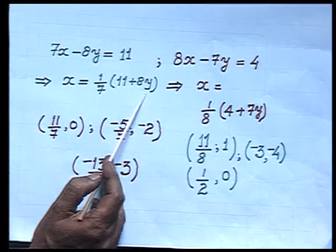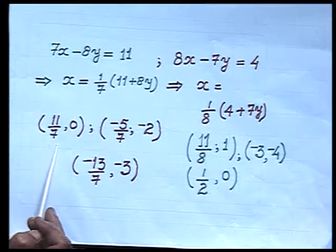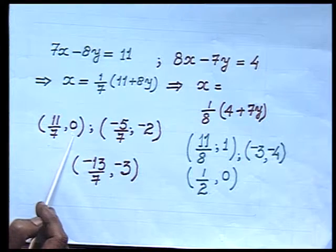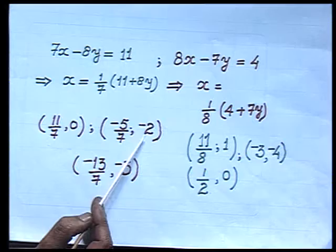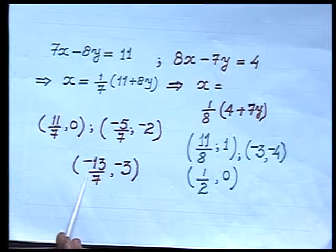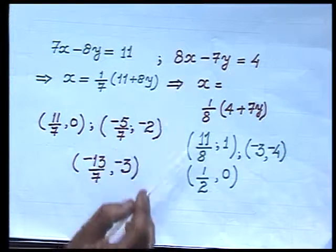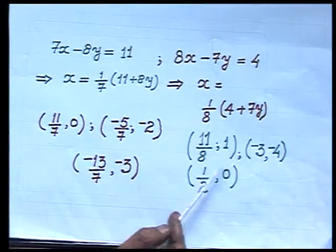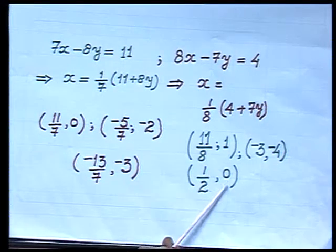Supposing I assign the value y equals 0, I get the value of x as 11 by 7. So the first ordered pair is (11/7, 0), the second ordered pair is (−5/7, −2), and the third ordered pair is (−13/7, −3). Similarly, for the second equation, the ordered pairs are (11/8, 1), (−3, −4), and (1/2, 0).